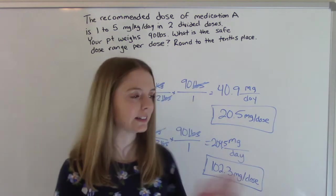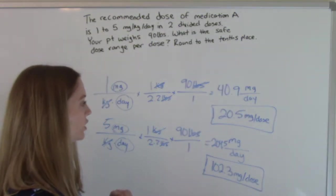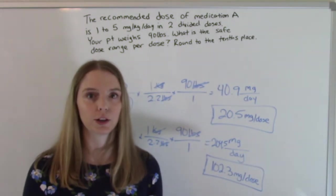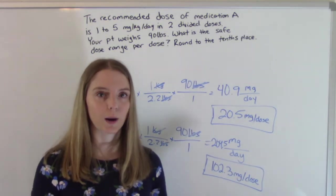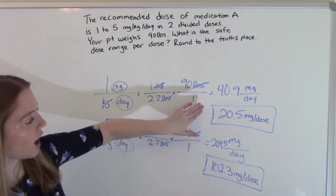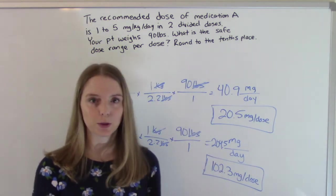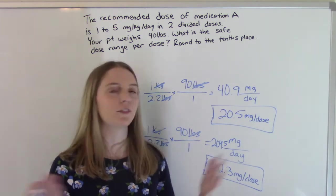So let's say, for example, doctor orders a medication, medication A, and it's 70 milligrams per dose. Is that within our range? Yes, because our lowest number is 20 and our highest number is 102 and 70 is in between that. So that's okay. That's a safe amount to give.